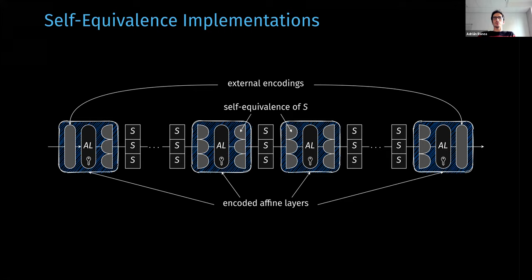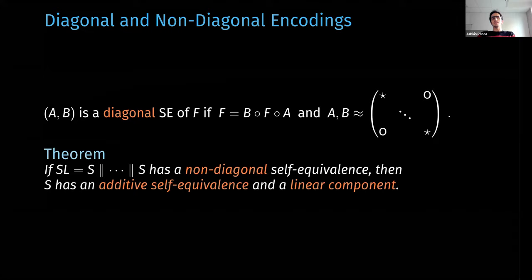While CG implementations can always be reduced to self-equivalence implementations, the other way around is only possible if the self-equivalence of the S-box layer consists of the concatenation of small affine permutations that we formalize here as diagonal self-equivalences. In this work, we study for the first time when an S-box layer has non-diagonal self-equivalence, and we prove a theorem that says that in order to have non-diagonal self-equivalence, the S-box needs to have additive self-equivalence and linear components. In other words, it needs to have weak properties.